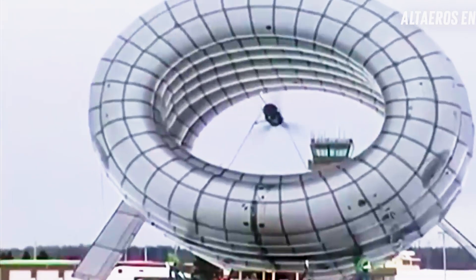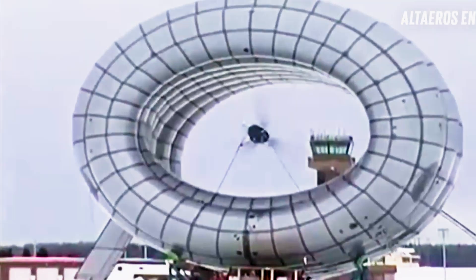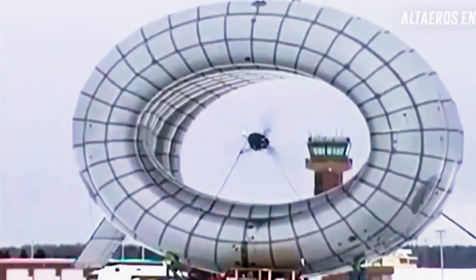Comprising four key components: shell, turbine, tethers, and ground station, the BAT system seamlessly integrates these elements to harness wind energy effectively.